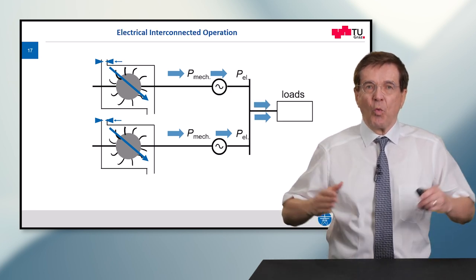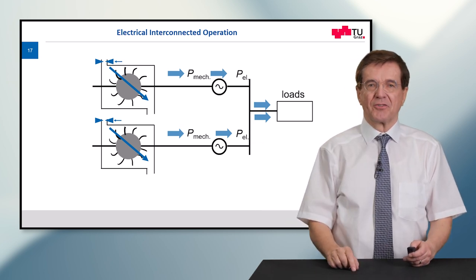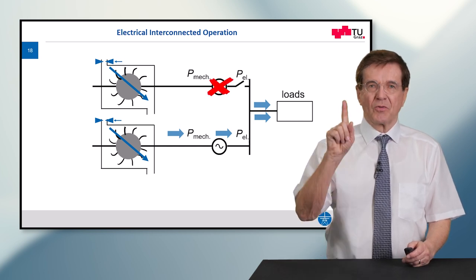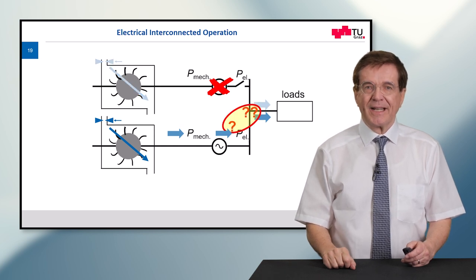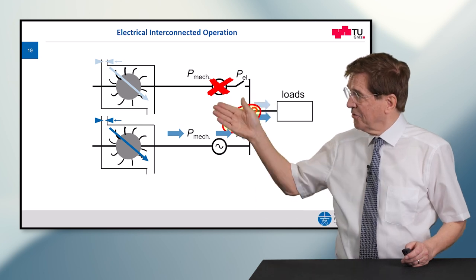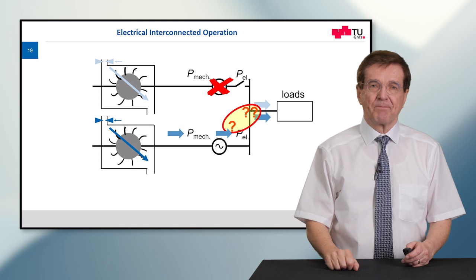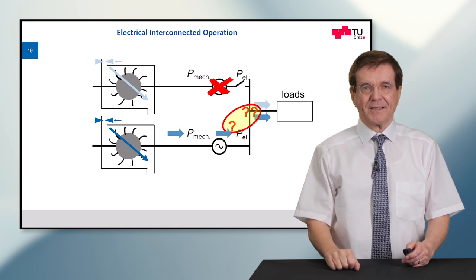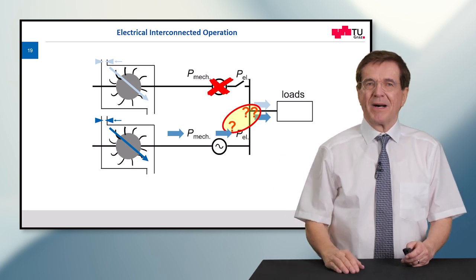Now let's assume something happens. For whatever reason, one turbine and one generator trips out, and now we have a severe problem. If you check this, the loads will take their old demand and power out of the grid, but there is only one generator supplying us. This is too little, so the imbalance of energy and the balance of power must be made up from something else.